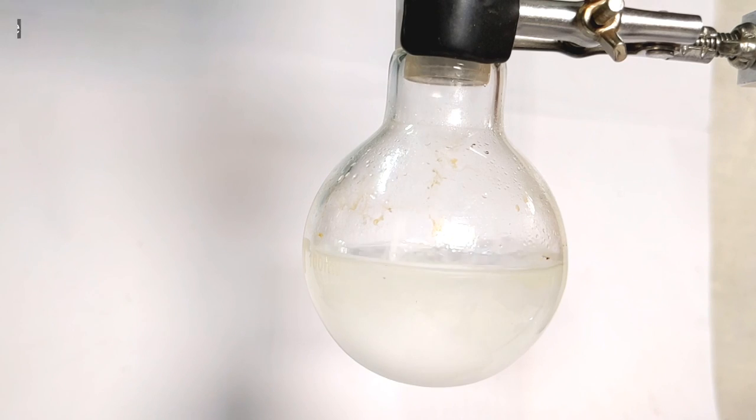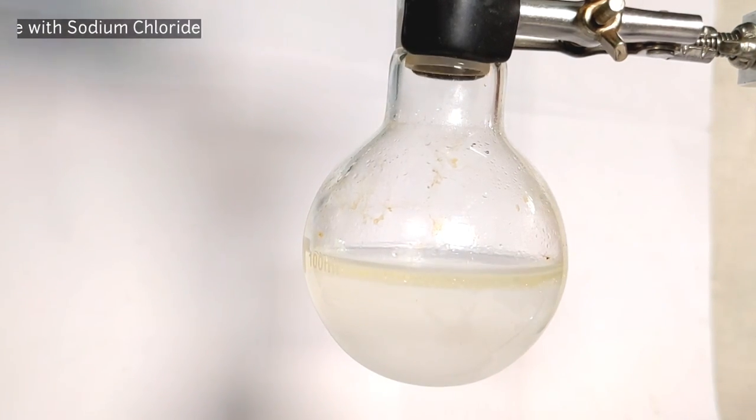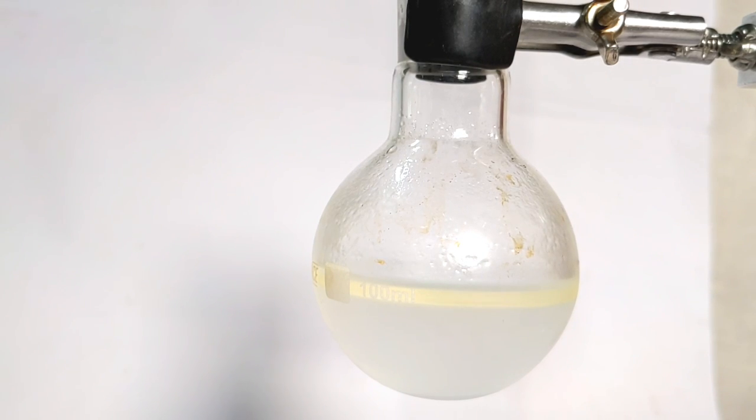The mixture was then saturated with approximately 15 grams of sodium chloride. This would help drive out any cyclohexanone dissolved in aqueous phase.